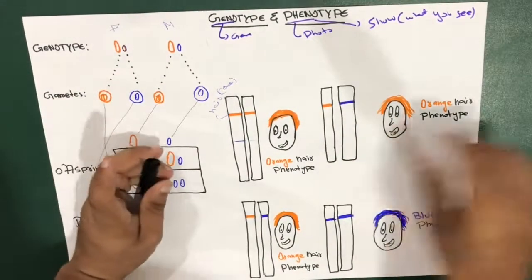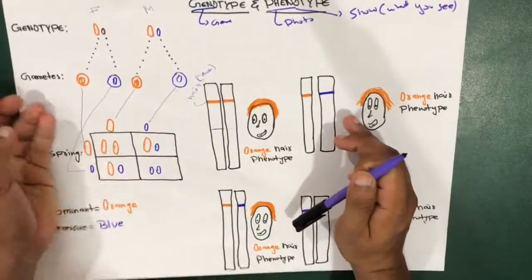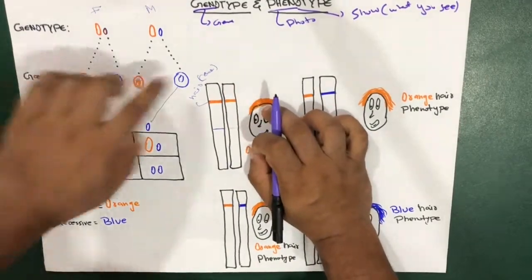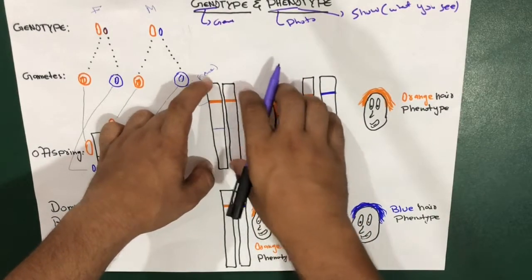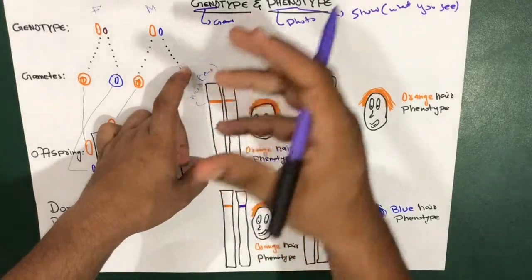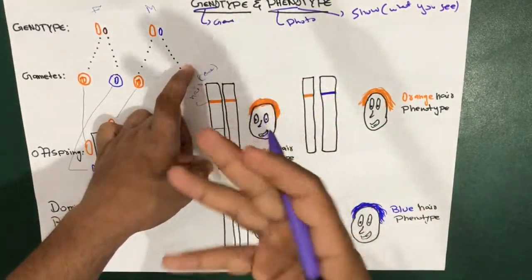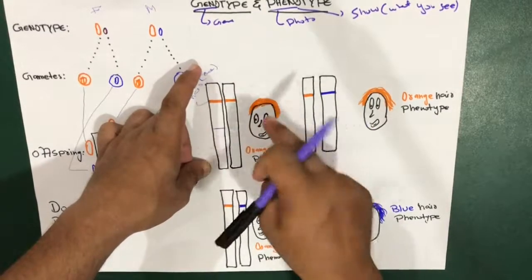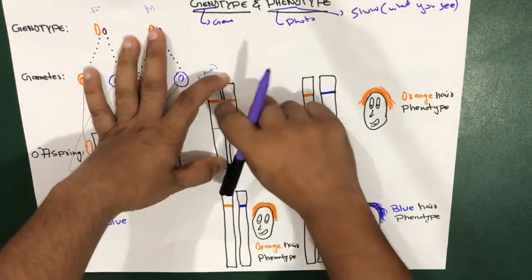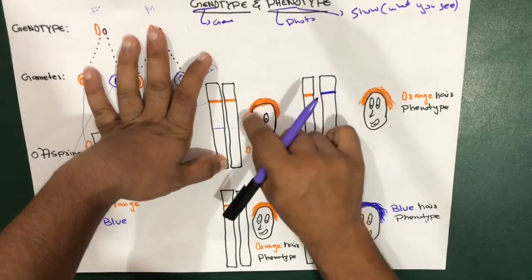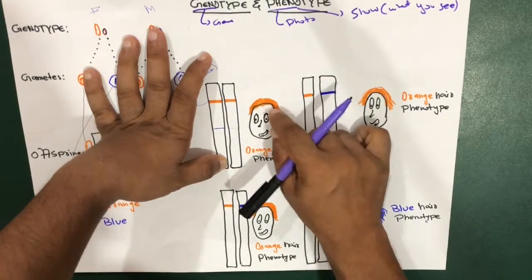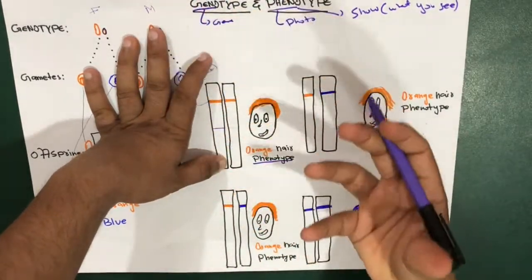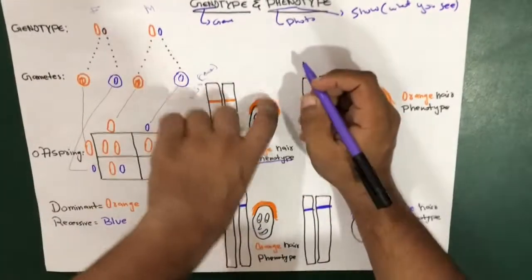So what happens if you get both genes in orange color? Orange color is predominant here. This is the genotype — the genetic constitution. The genotype is the genetic constitution of an individual organism. And what you get from this gene is the orange color. The orange color here is actually the phenotype — a set of observable characteristics of an individual resulting from the genotype.